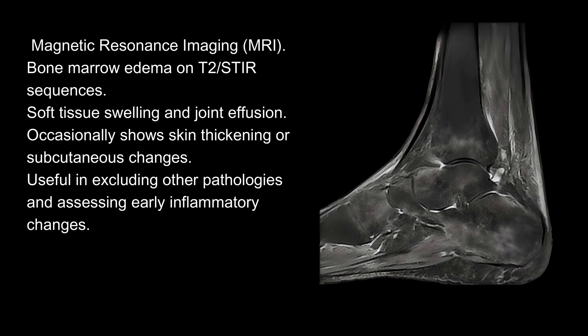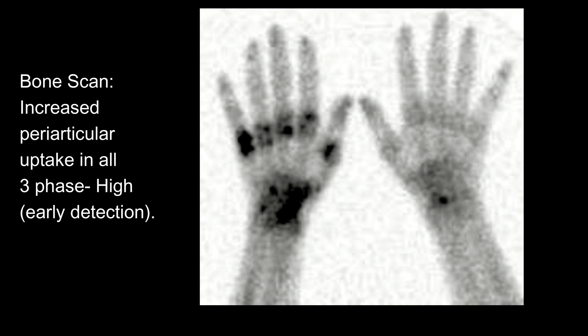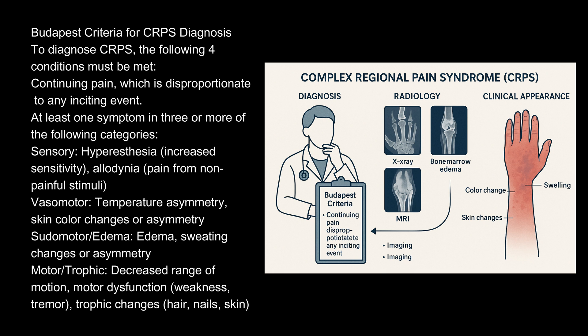MRI: bone marrow edema on T2/STIR sequences, soft tissue swelling, and joint effusion. Occasionally shows skin thickening or subcutaneous changes. Useful in excluding other pathologies and assessing early inflammatory changes. Bone scan: increased periarticular uptake in all 3 phases, useful for early detection.